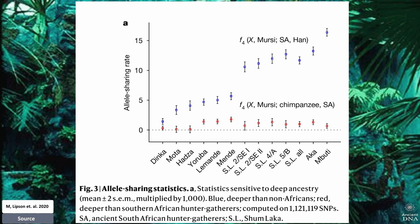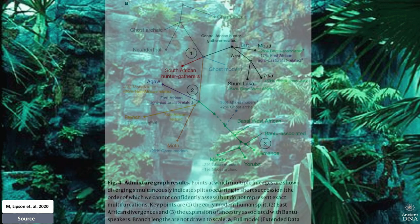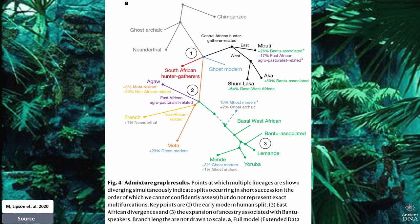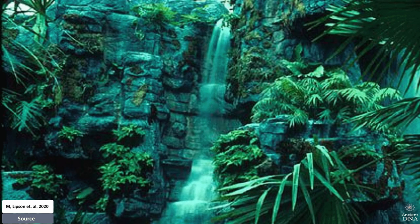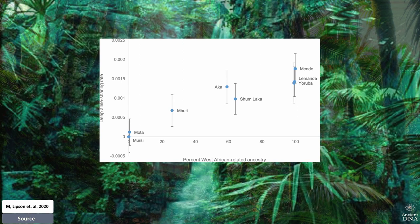The signals of deep ancestry in groups related to the West African clade can be explained by two admixture events: one along the ancestral West African lineage, and a second smaller contribution of about 4% to the Mende from the same source. F4-statistics testing for ancestry basal to southern African hunter-gatherers are well correlated with the inferred proportion of ancestry from the West African clade.